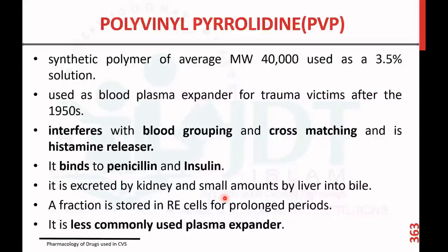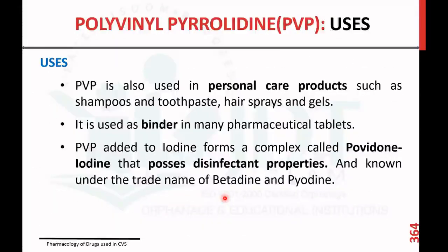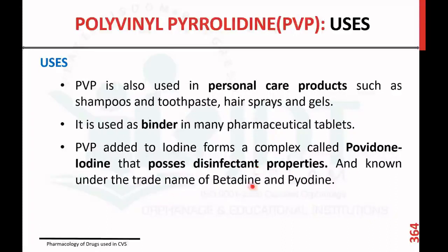PVP is less commonly used as a plasma expander today, but it has other uses such as in personal care products like shampoo, toothpaste, hair spray, and gels. It is also used as a binder in pharmaceutical tablets. Polyvinyl pyrrolidone is added to iodine to form a complex called povidone-iodine, which possesses disinfectant properties and is known under the trade names Betadine and Biodin.